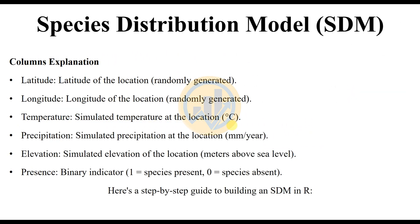The column explanations for the table: latitude — randomly generated location latitude; longitude — randomly generated location longitude; temperature — simulated temperature at the locations in degrees; precipitation — simulated precipitation at the locations in millimeters per year; elevation — simulated elevation of the locations in meters above sea level; presence — a binary indicator where 1 equals species is present and 0 equals species is absent.